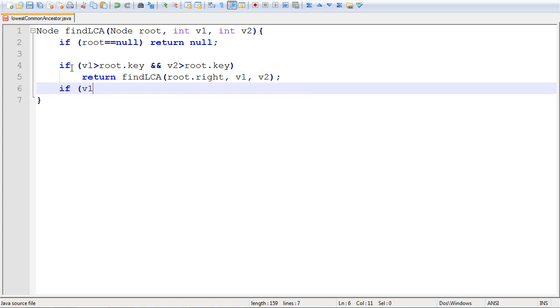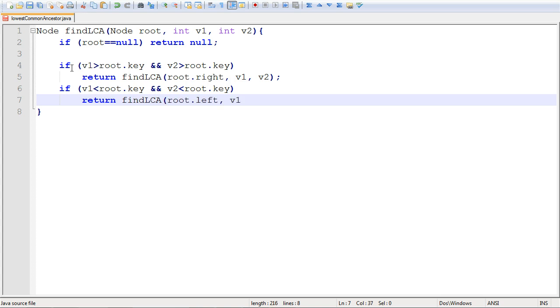Now if they are both less, so v1 is less than root.key and v2 is less than root.key, then we will call that same method once more, but this time on the left subtree. So the same logic will be applied on the left subtree.